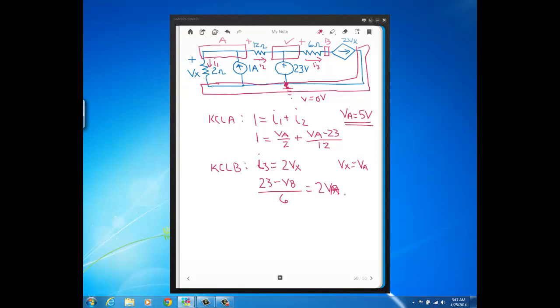And then you plug in 5 volts here, solve for VB, and you'll get that VB is minus 37 volts. So those are our answers for our node voltages.